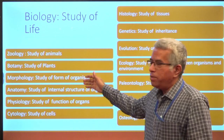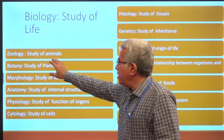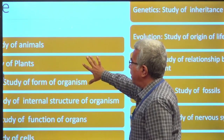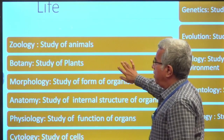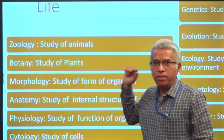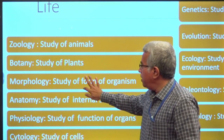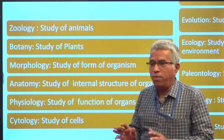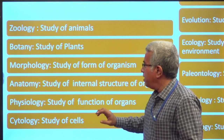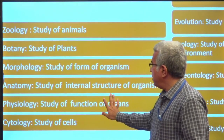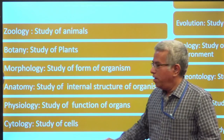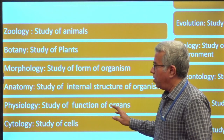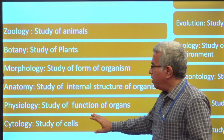There are various branches under biology. Zoology is the study of animals. Botany is the study of plants. Morphology is the study of the form of an organism — that means it deals with the external form of the organism. Anatomy is the study of the internal structure of an organism.